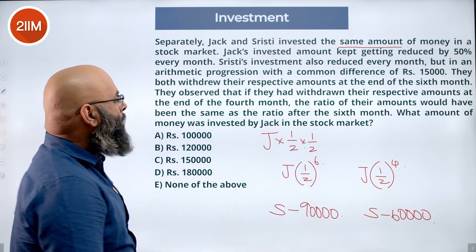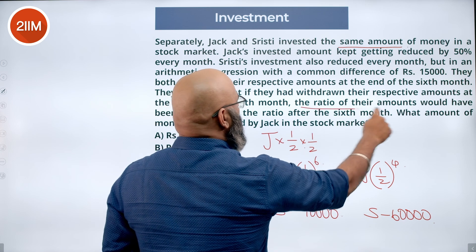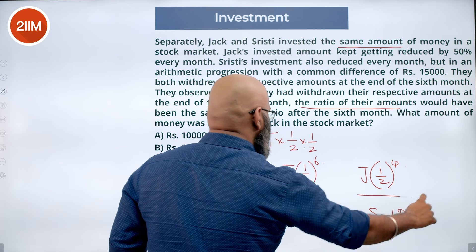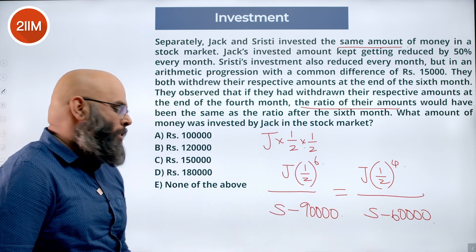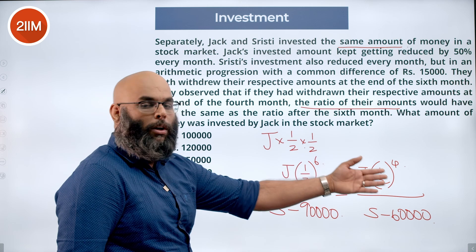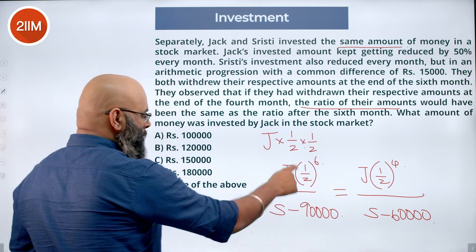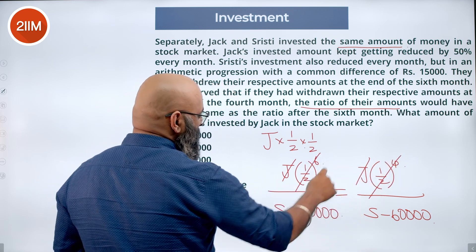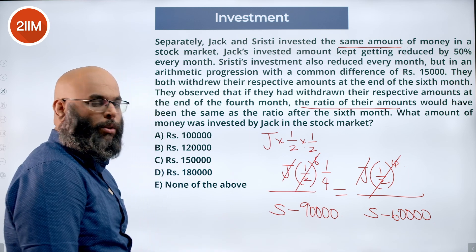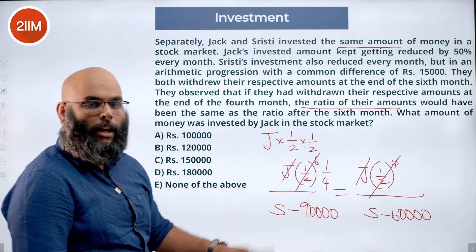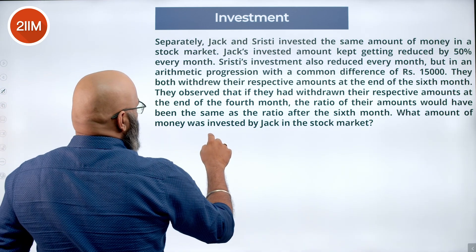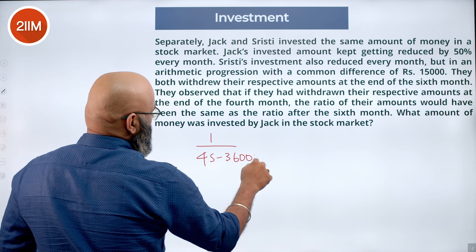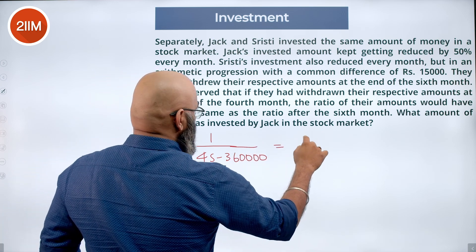From the problem, the ratio of their amounts is the same for six months and four months. So: J×(1/2)^6 divided by (S − 90,000) equals J×(1/2)^4 divided by (S − 60,000). To simplify, J cancels and (1/2)^4 cancels from both sides. This gives (1/2)^2, which is 1/4, on the left. Moving the 4 to the denominator, we get: (1/4)×(S − 60,000) = S − 90,000, or equivalently S − 60,000 = 4×(S − 90,000).